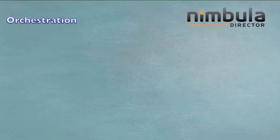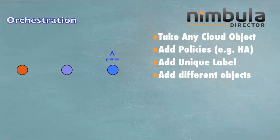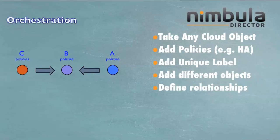Let's introduce the concept of orchestration. Take any cloud object and add policies — for example, HA. We can add a unique label to identify that object. We can add different kinds of objects and add policies as well as labels to each one of them. We can define relationships between different kinds of objects — for example, A depends on B, and C depends on B as well.